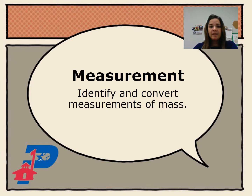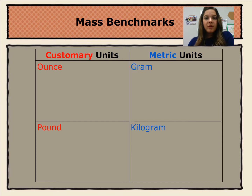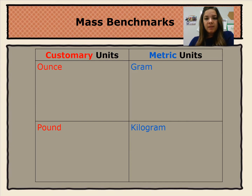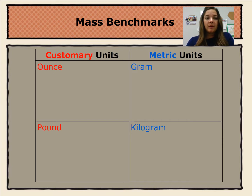Today we'll be learning how to identify the relative sizes of measurement for mass and how to convert measurements of mass within the same system. We're going to learn some benchmarks so that we can estimate the relative size of mass for different items. There's the customary system and metric system. Customary units include ounces and pounds, and the metric system includes grams and kilograms.